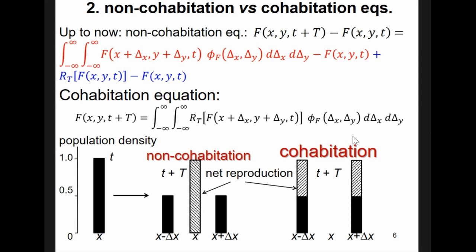In contrast, in the cohabitation equation, we first apply, for example, the reproduction, and then we apply the dispersal to the resulting population. We could do it the other way around, to apply first the dispersal and then the reproduction, but the speed is the same. So, the important fact is that this model has a difference from this one. And how can we see that this model is better than this one?